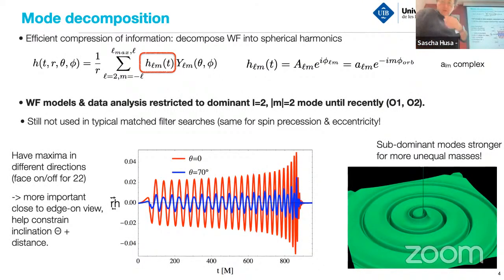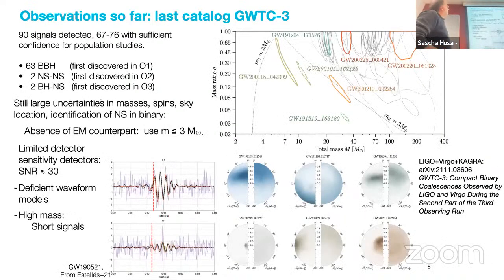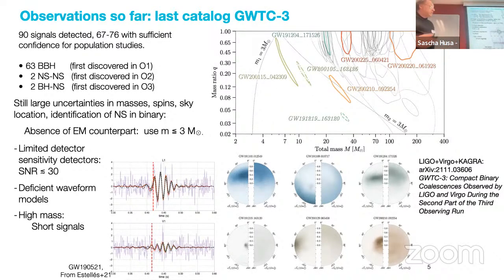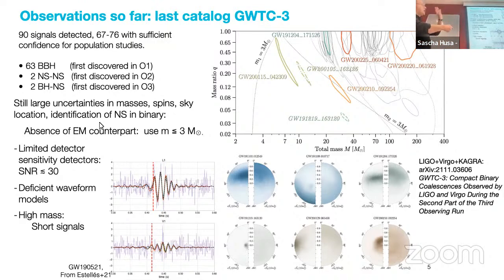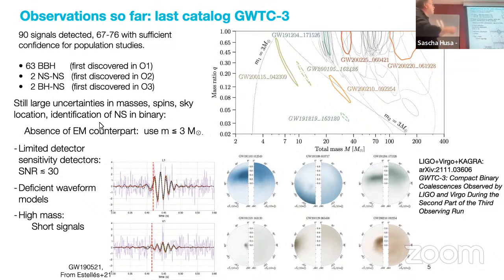The LIGO-VIRGO collaboration has published different catalogs of signals. The latest is Gravitational Wave Transient Catalog 3 (GWTC-3), with 90 signals detected — 67 or a few more with sufficient confidence for population studies. Of these, 63 are binary black holes discovered in the first observation run, two binary neutron stars (the first covered in the second run), and two black hole–neutron star systems discovered in the third run.